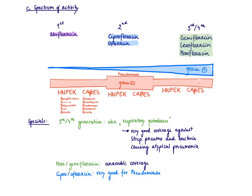In the second generation, we start to have some moderate gram-positive activity, which then increases even in these newer floxacins, the third and fourth generation, including gemifloxacin, levofloxacin, and moxifloxacin.